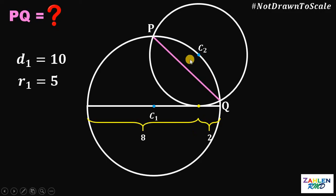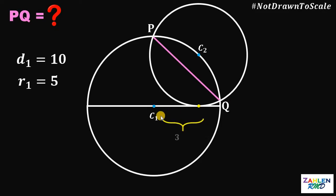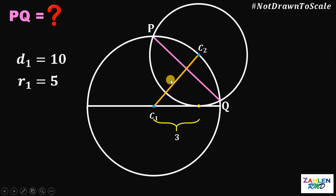Since we know the length of the radius of this big circle, the distance from the center of this big circle to the intersection point must be equal to 5 minus 2, or simply 3 units. Now let's connect the two centers, and we know this segment must be equal to 5, because this is just the radius of the big circle.